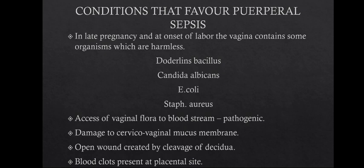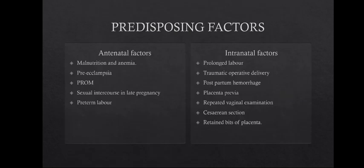The predisposing factors for puerperal sepsis are divided into antenatal and intranatal factors. Antenatal factors include malnutrition and anemia, preeclampsia, premature rupture of membranes, sexual intercourse in late pregnancy, and preterm labor. If the mother's nutritional status is poor and hemoglobin is reduced, her immunity may not be adequate, making her very prone to infection. Preeclampsia and premature rupture of membranes also increase the chance of developing infection.